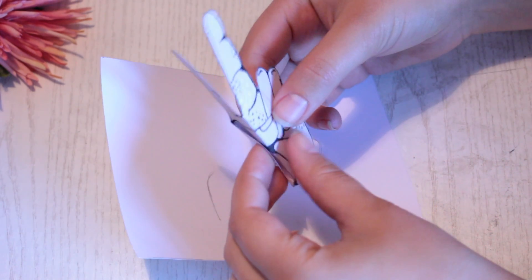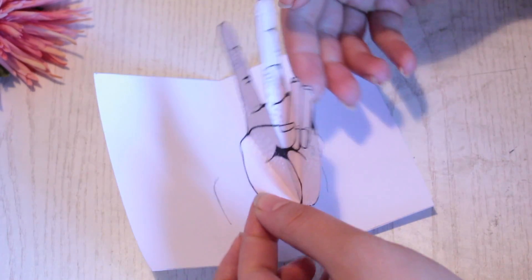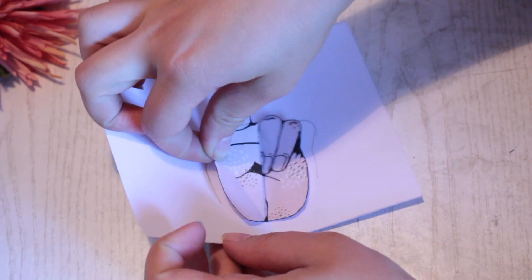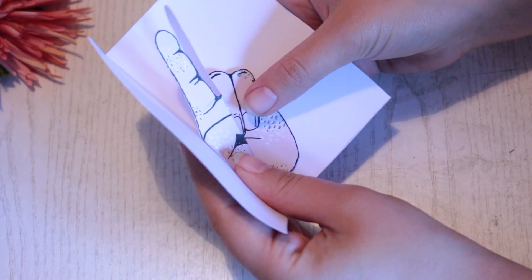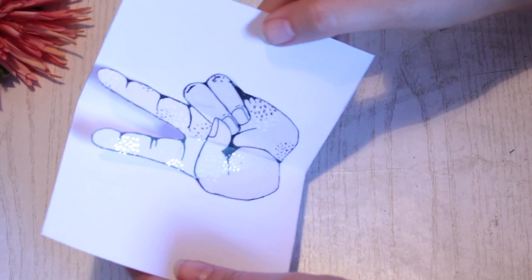Then fold the hand in a fan-like way and then put it back into the card. And try to place it back right into the sketched area you made earlier. And then rub it all over to make it stick properly.